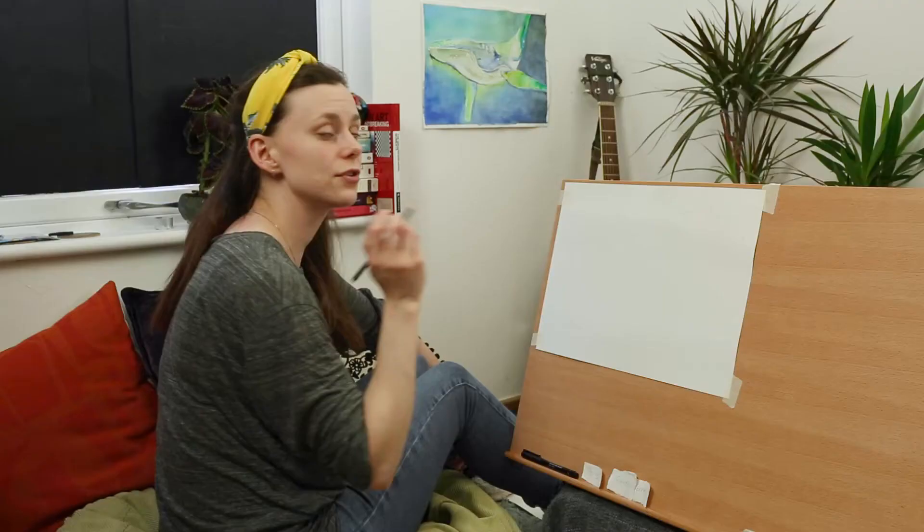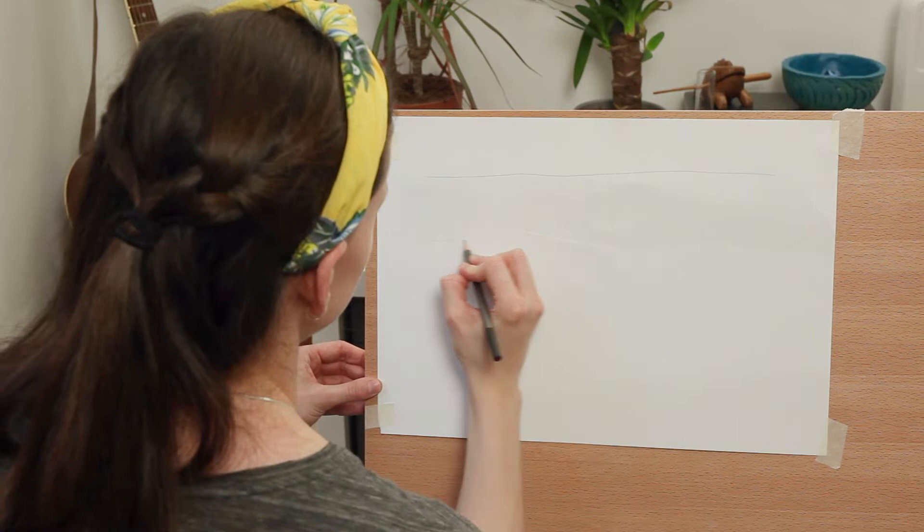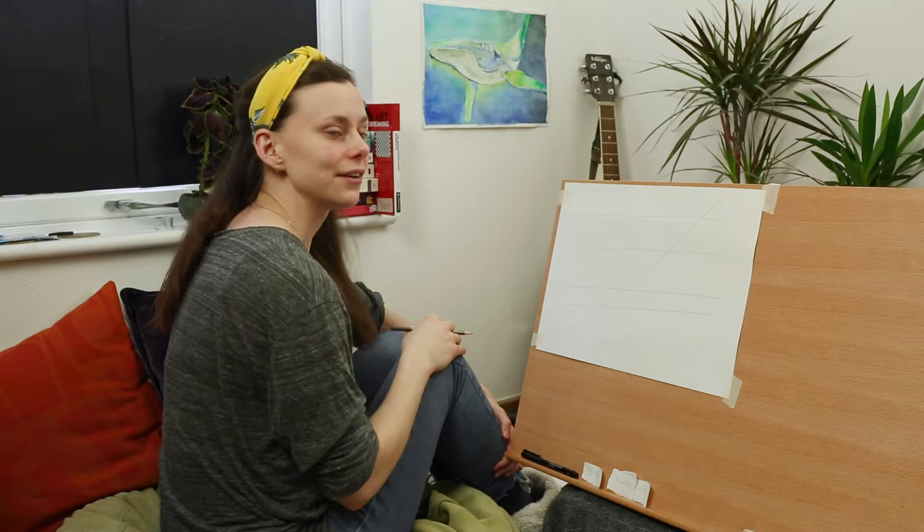We're going to draw lines horizontally across our piece of paper and we're going to draw one diagonally. So if you start by drawing four lines horizontally, they don't have to be evenly spaced and then one diagonally. And the idea is that we're going to draw our objects but as we get to each line we move along the line either left or right before continuing with our drawing.